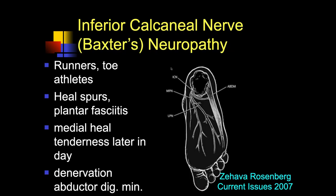This just shows Baxter's nerve, Baxter's neuropathy, the nerve coming around here. You see it in runners and toe athletes; it's thought to be associated with heel spurs and plantar fasciitis. The spur is really a fixed element — probably associated with spurs because the spur is a sequela of trauma to the origin of the plantar fascia. It's more a marker of prior trauma rather than the spur itself causing the trauma.